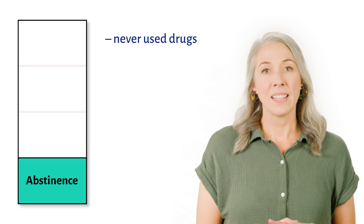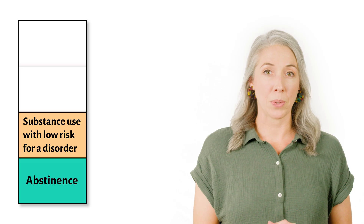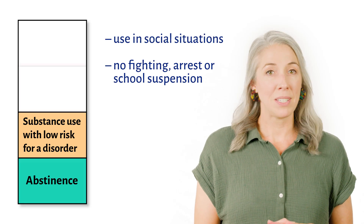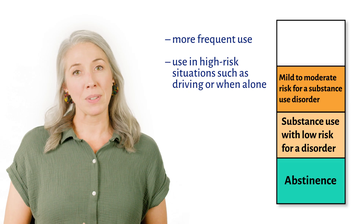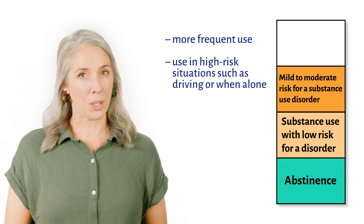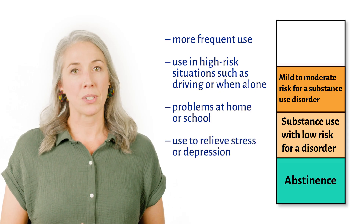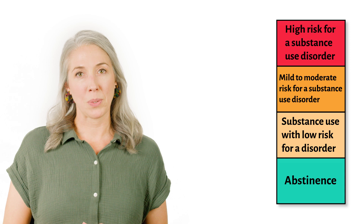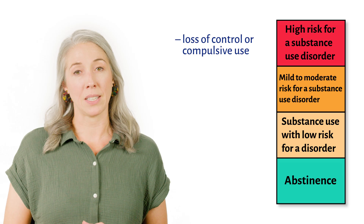Screening tools can help determine the level of risk, from abstinence to higher risk for a substance use disorder. Abstinence means they never use drugs or more than a few sips of alcohol. Low risk means they have used substances but haven't developed significant problems. Mild to moderate risk means they use more frequently or in high-risk situations such as while driving or when alone, with possible problems at home or school, or use to relieve stress. High risk means they've experienced loss of control or used compulsively with significant problems related to their substance use.